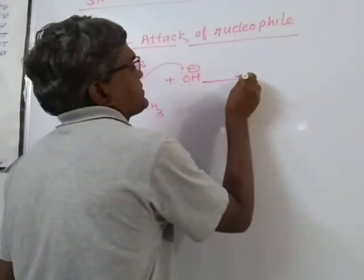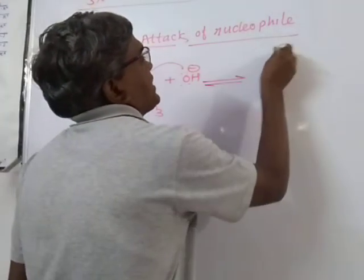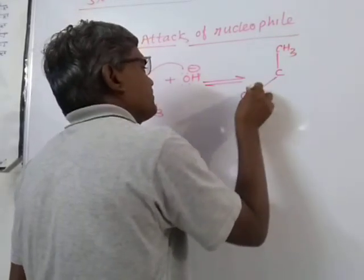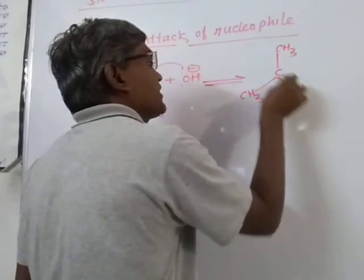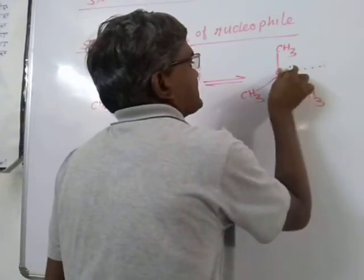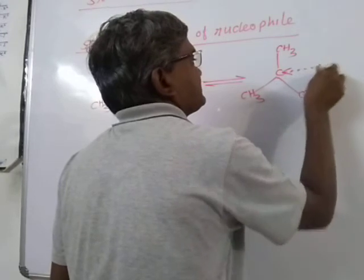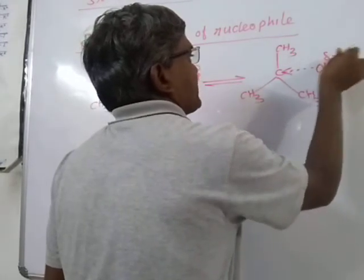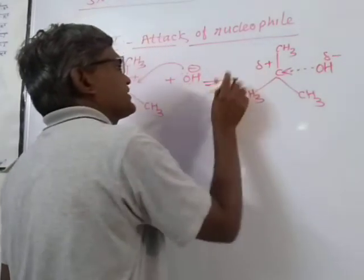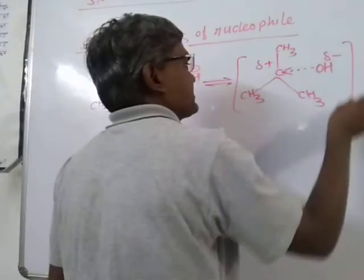There will be formation of a transition state again, as the bond does not form instantaneously. The nucleophile will be approaching towards the carbon — it will be partially negative and the carbon partially positive. So again this is transition state 2.